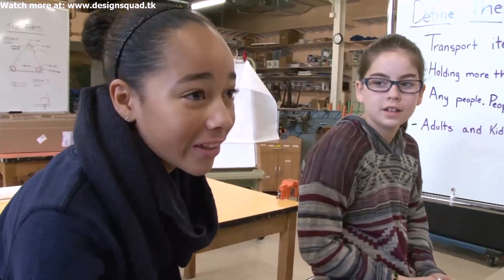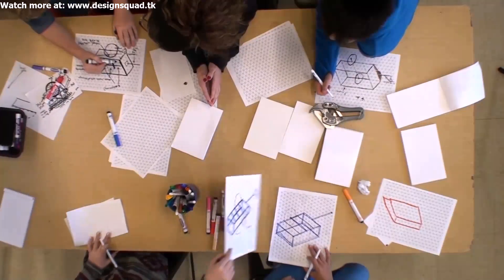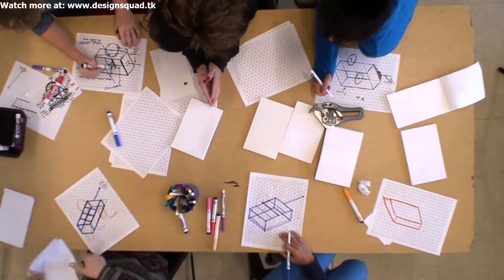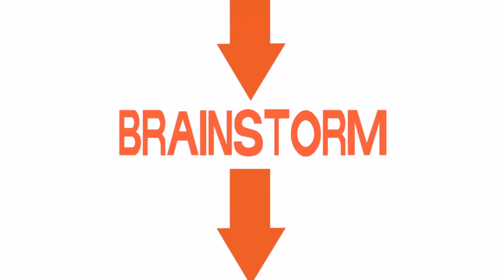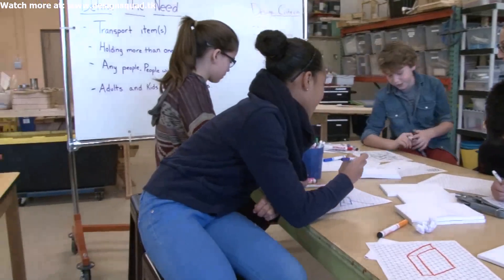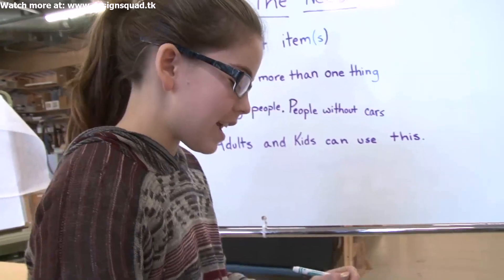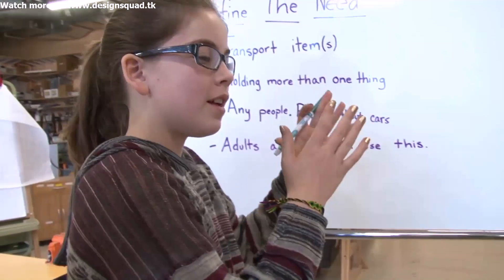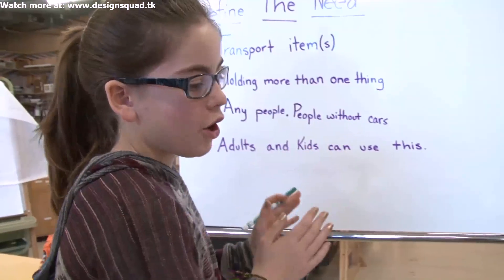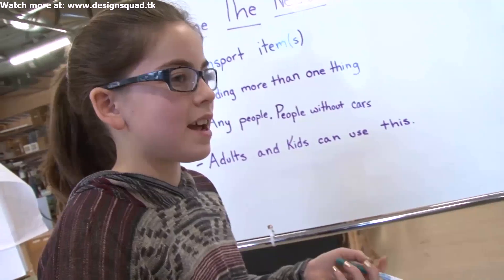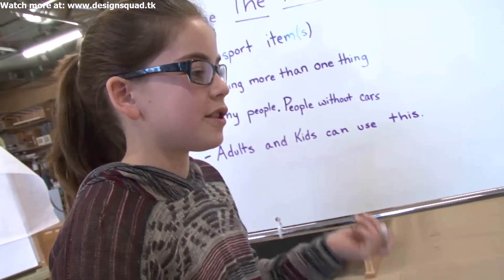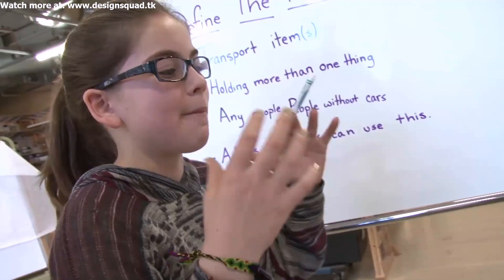So what's the next step? Brainstorming. Once an engineer or inventor understands the need, it's time to brainstorm to generate ideas and come up with solutions. What if we had a separate little area in the cart that was padded so we could have eggs and other stuff that can get broken? I think that's a really good idea.